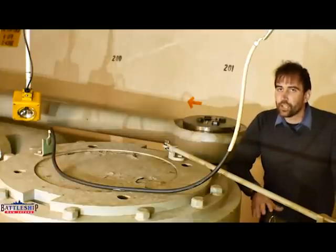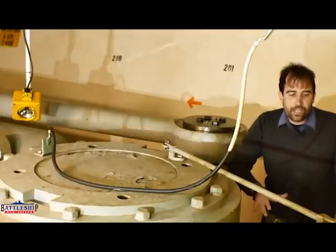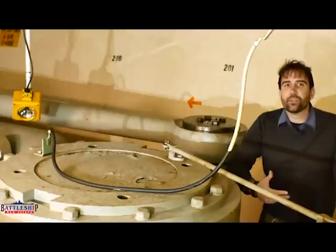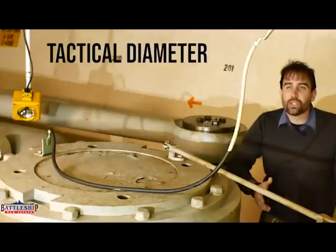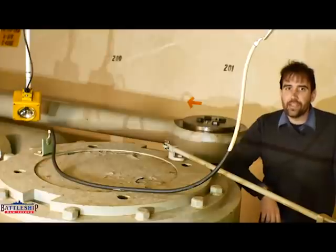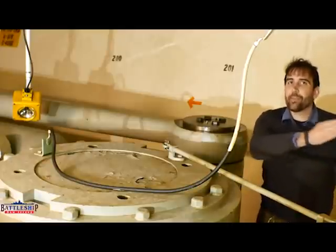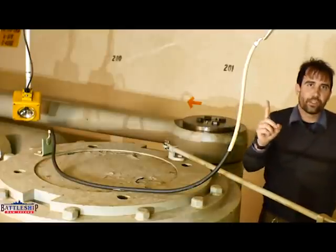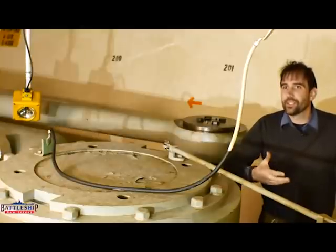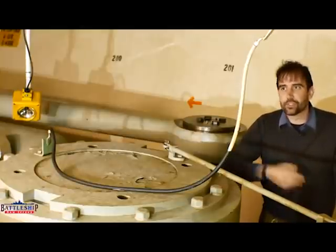First off, turning radius is more accurately known as a tactical diameter. So, it's what is the tightest full circle you can turn. And the number is the diameter of the circle that the ship will turn in at high speed when she's doing a hard over turn.